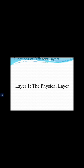Now we see about the functions of the different layers. The first layer is the Physical Layer. The Physical Layer is the lowest layer of the OSI model. It activates, maintains, and deactivates the physical connection, and is also responsible for transmission and reception of unstructured raw data over the network.